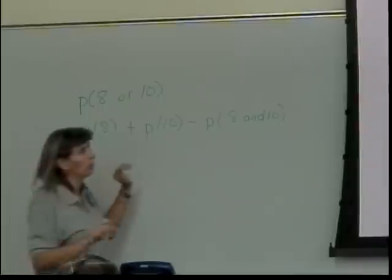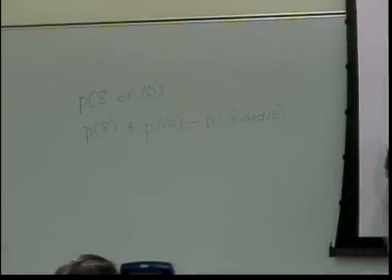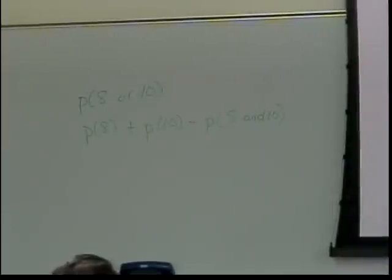What's the probability of getting an 8? Let's go read our table. Here's our 8. So our diagonal has the 6,2, 5,3, 4,4, 3,5, and 2,6.